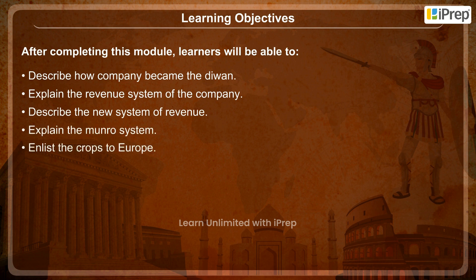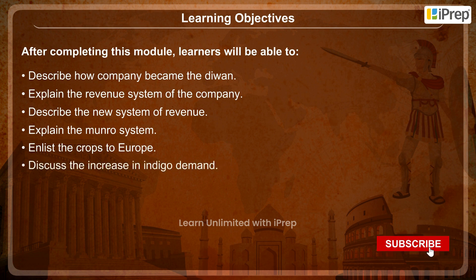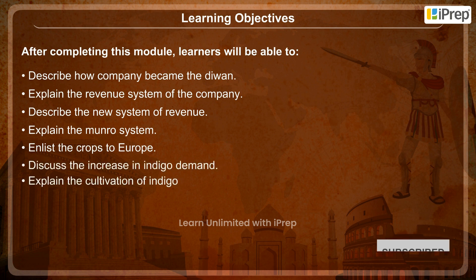Learners will also be able to: enlist the crops exported to Europe, discuss the increase in indigo demand, explain the cultivation of indigo, and describe the Blue Rebellion.